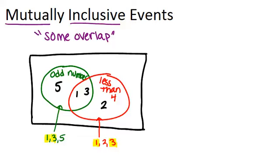Now, let's think about probabilities. The probability of getting an odd number is just 3 out of 6, because there are 6 numbers and 3 of them are odd. That reduces to 1 half. Similarly, the probability of getting a number less than 4 is also 3 out of 6, or 1 half.